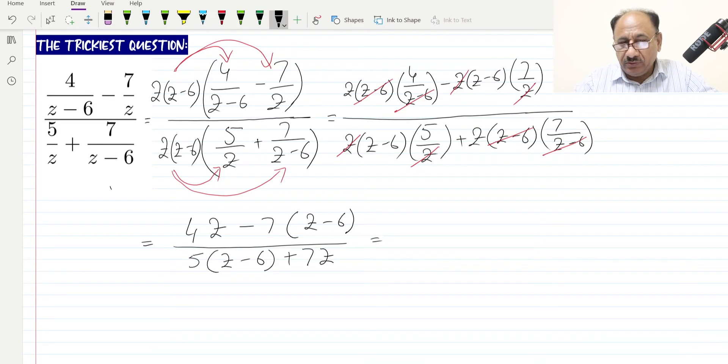In an exam, if you make a mistake, it will be stressful and you will lose time because you will have to revisit the question. So 4z minus 7z, and we open the bracket: minus 7 times minus 6 will be plus 42.